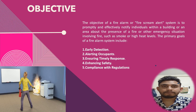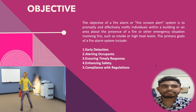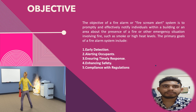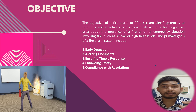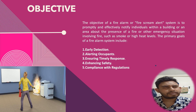Assalamualaikum. Thanks to Mehrab for giving me a chance. I am Tanbir Rahman. The objective of a fire screen alert system is to promptly and effectively notify individuals within a building or area about the presence of fire or other emergencies such as smoke or high heat levels. The primary goals of a fire alarm system include early detection — detecting fire and smoke as early as possible to minimize the spread of fire and maximize time available for evacuation.